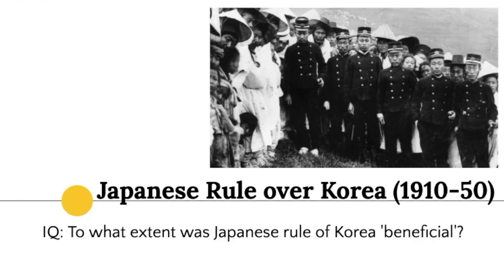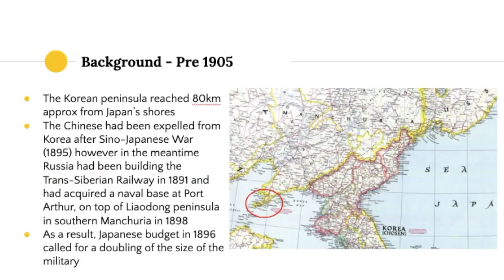Hi students. What we're going to be talking about today is Japanese rule over Korea from 1910 to 1950. This forms one of the sections of the China and Korea HL paper 3 topic from 1912 to 1950, and the broad inquiry question we're going to develop an argument for is: to what extent was Japanese rule over Korea beneficial?